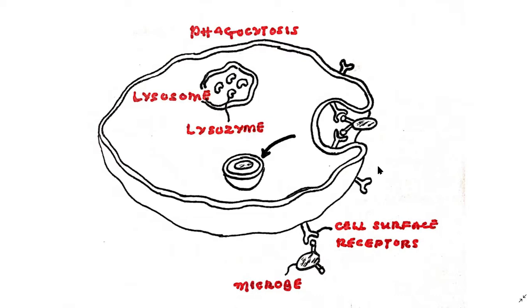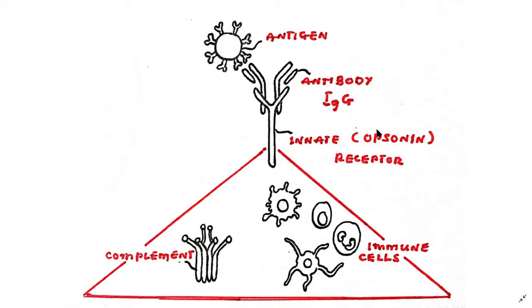Now let's look at a few cell surface receptors. We start with opsonin receptors. So opsonin receptors are used to bind bacteria or other particles that have been coated with immunoglobulin G or IgG antibodies by the immune system.